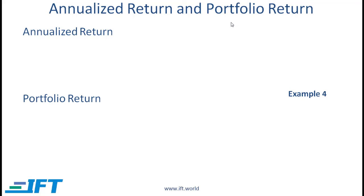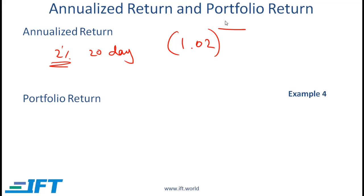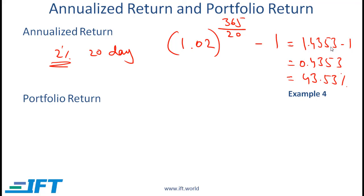Annualized return: whenever comparing investments over different holding periods, annualize to make an apples-to-apples comparison. If you have a 2% return over a 20-day period, annualize by raising 1.02 to the power of 365/20 — where 365/20 represents the number of 20-day periods in a year — then subtract 1. The result is 1.4353 - 1 = 43.53%.